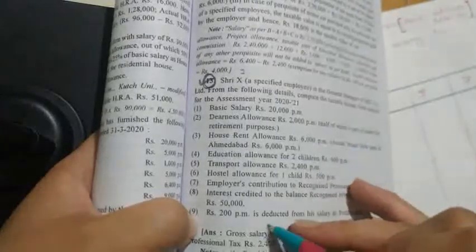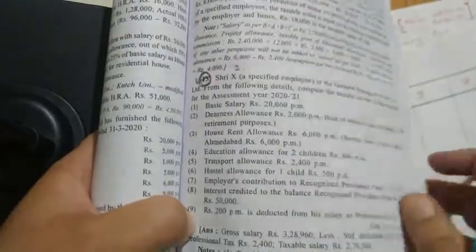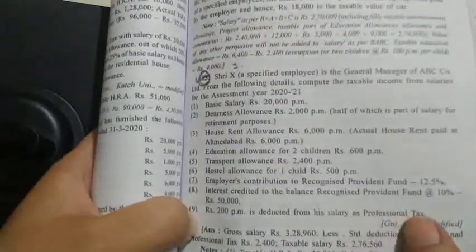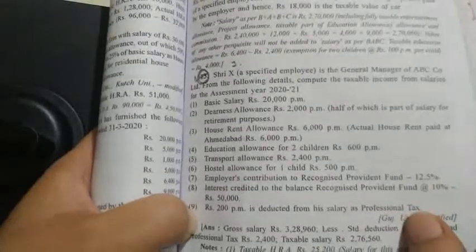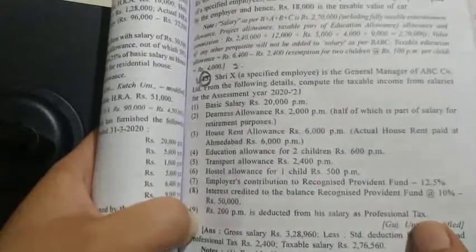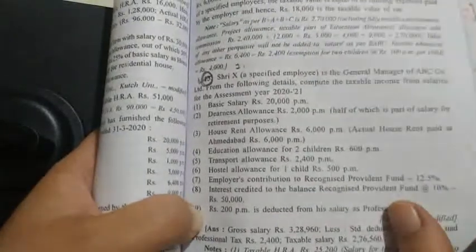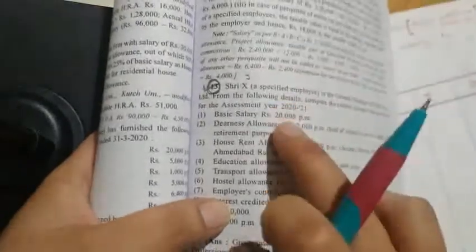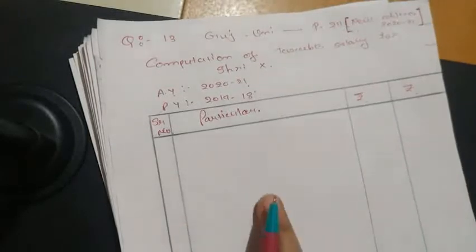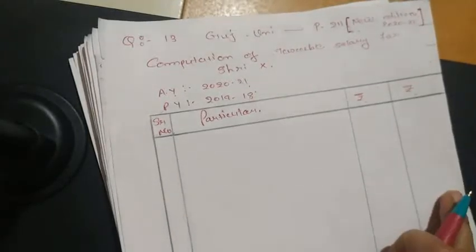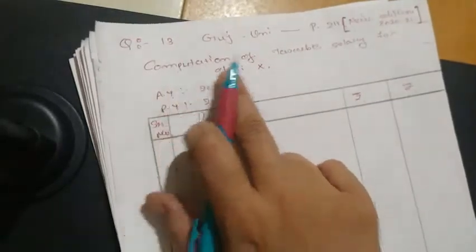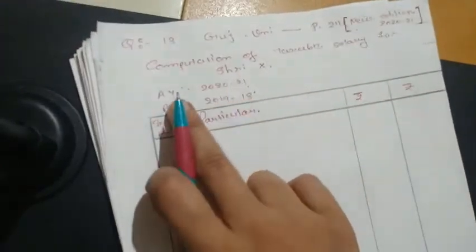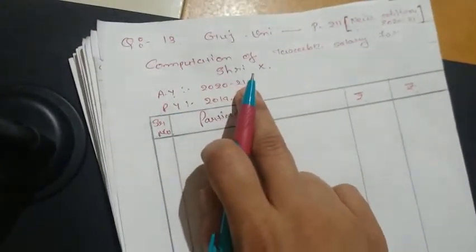Basic salary is given as ₹20,000 per month. You need to make a table with 4 columns: serial number, particulars (inner and outer columns). The heading will be 'Computation of Taxable Salary for Shree X', Assessment Year 2020-21, Previous Year 2019-20.